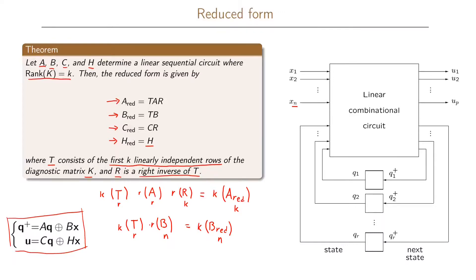For the reduced form of the C matrix: C maps the current state to the output, so it is a P by R matrix. The right inverse R of T is an R by k matrix. Therefore, the reduced form of C, which is C times R, is a P by k matrix. Since k is less than R, the reduced matrices are smaller than the original ones, reflecting fewer state variables.